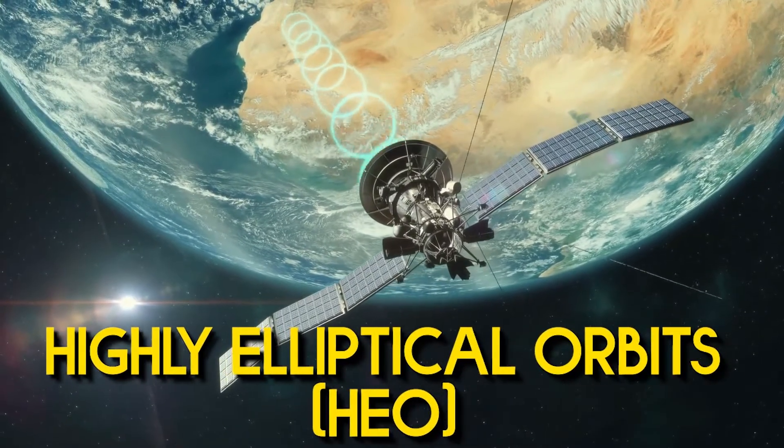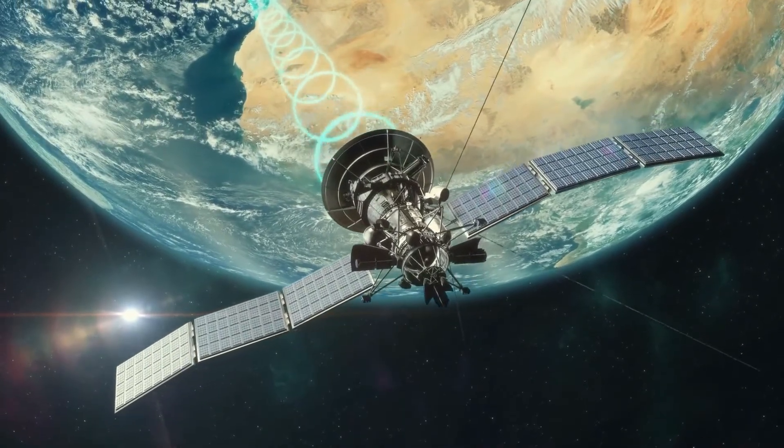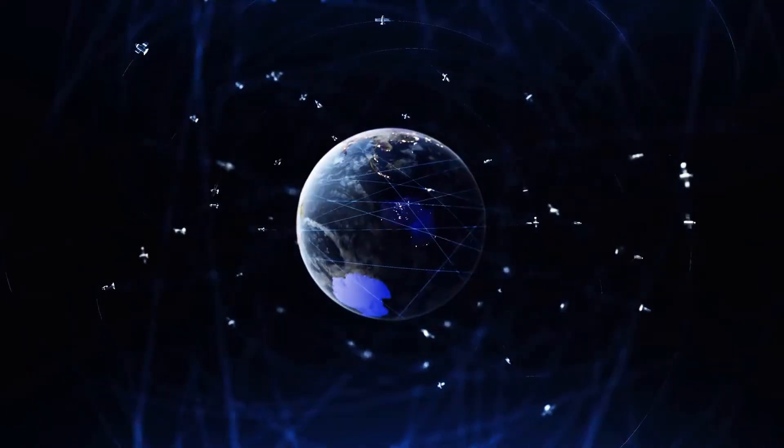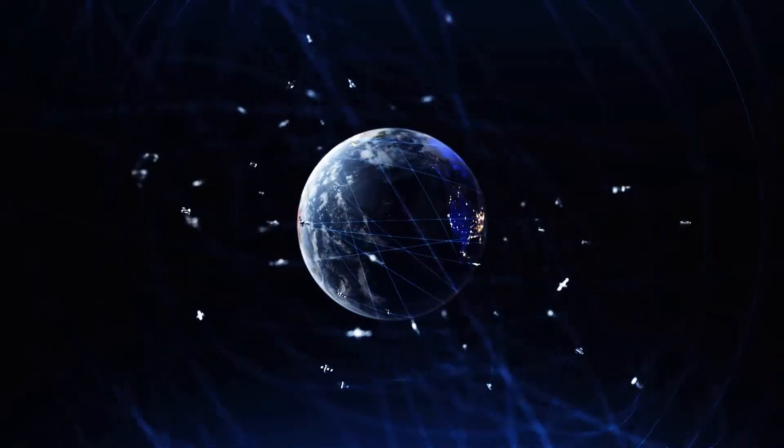Finally, there's highly elliptical orbits, which provide extended coverage over specific areas of the Earth. All of these orbits can be customized based on how a satellite is launched and where it's deployed.